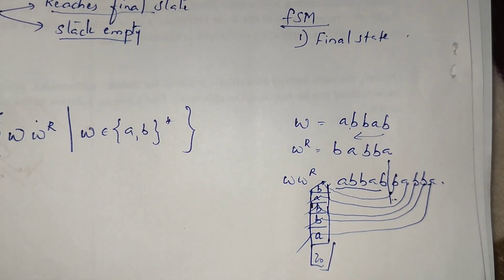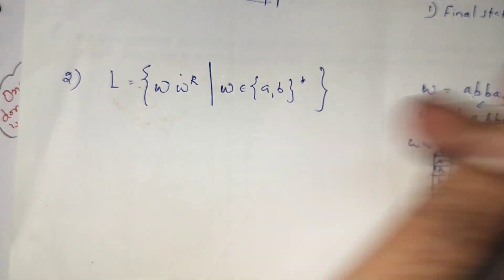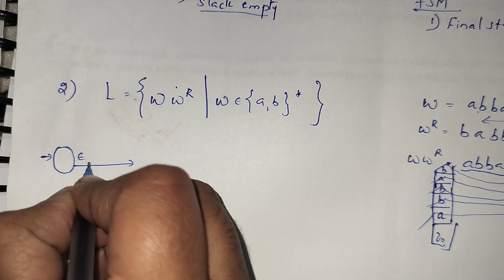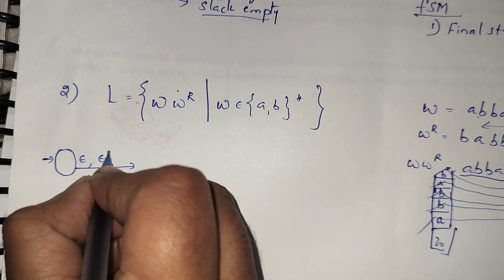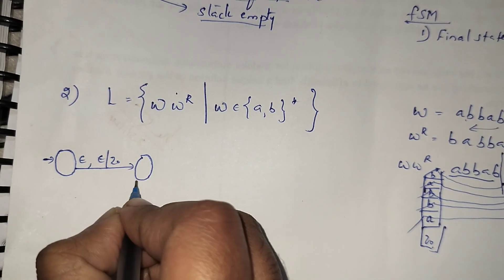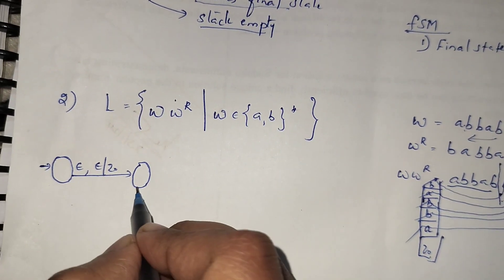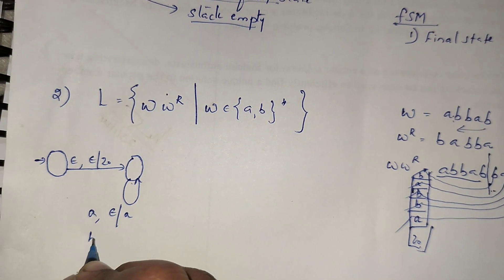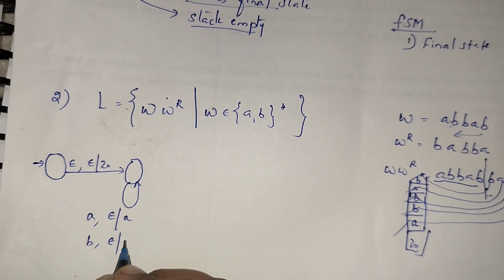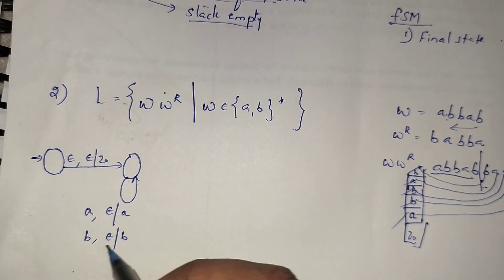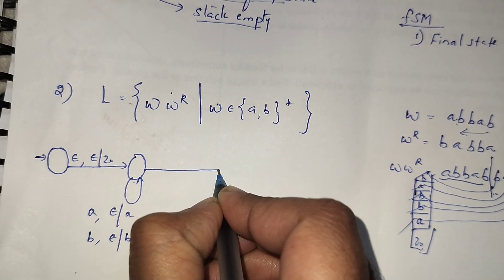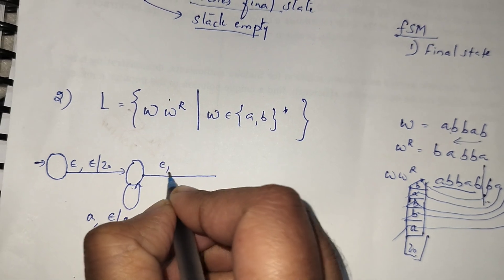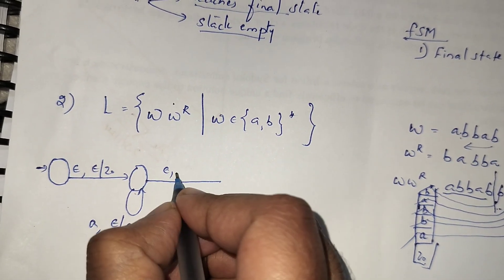Initially we push Z0 to the stack. This is the starting state. Without seeing any input symbol and without popping anything, we push Z0 to the stack. Then, whenever we see a's and b's, we push them to the stack: seeing a — push a without popping; seeing b — push b without popping. Any number of a's or b's. When w is completed, without seeing any input symbol we change the state, doing nothing — not popping, not pushing.